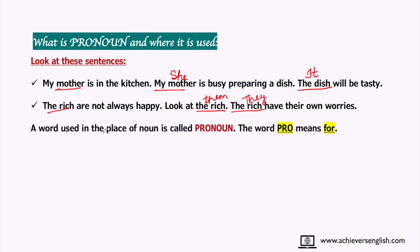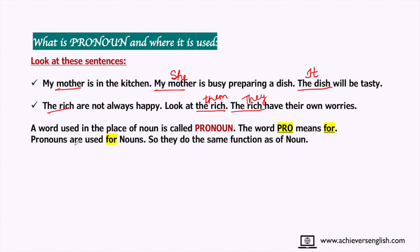So a word used in the place of a noun is called a pronoun. The word 'pro' means 'for,' meaning pronouns are used for nouns, and they do the same function as a noun.